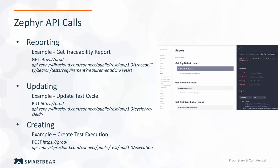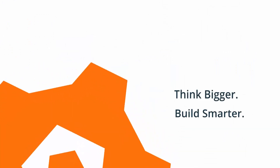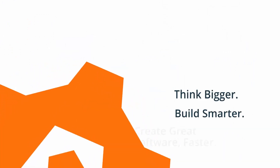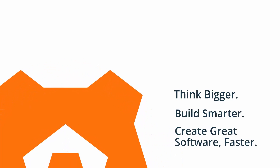Some examples include getting a traceability report, updating your test cycle, and creating your test execution. You can explore all there is to offer within the API documentation to integrate with the other work you're doing around your testing processes. Thank you for watching. Please refer to our documentation for more information on using the REST API within Zephyr for Jira.